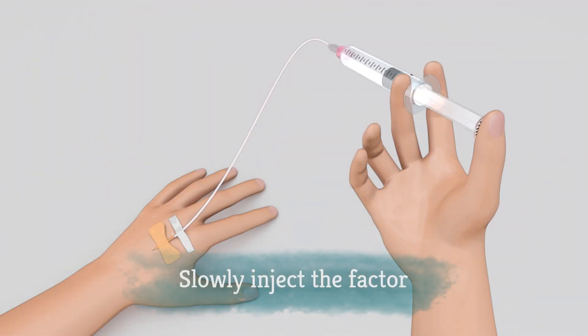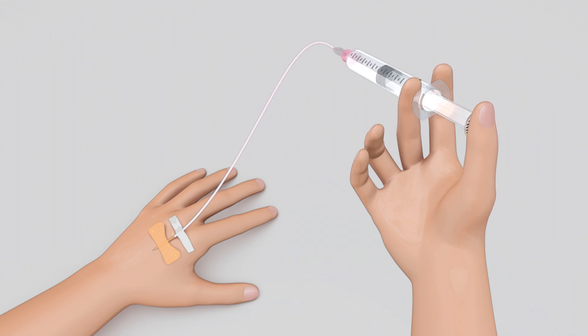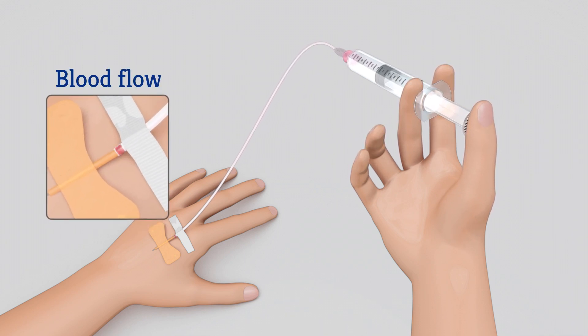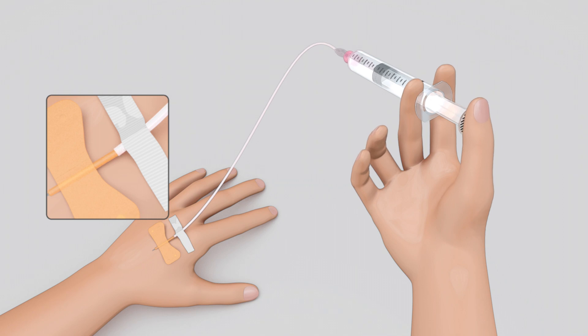Slowly push down on the plunger to inject all the Factor. Make sure you're still in the vein by checking for blood return every 5 to 10 cc of Factor you inject.